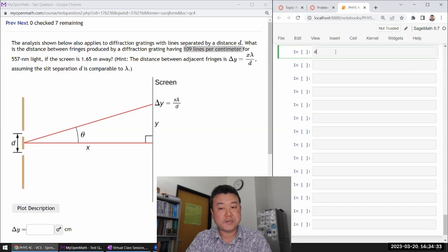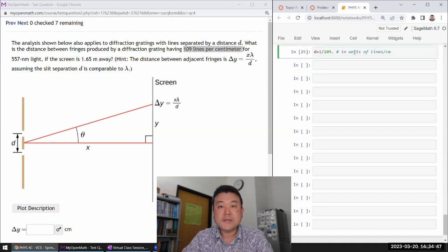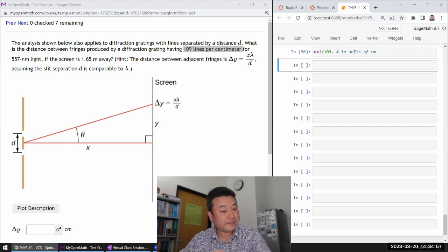Instead we're given 109 lines per centimeter. What you should know is d is just the reciprocal of that - 1 over 109 - in units of centimeters. That's our d. I can just plug in the rest of the numbers for this formula.